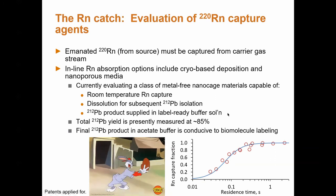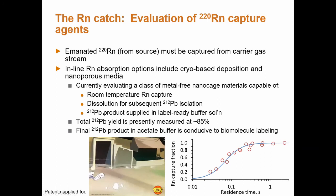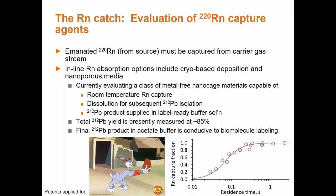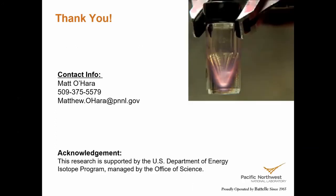The overall process between the pitch and catch processes achieves about 85% yield, and we don't think you can get beyond that yield with the wet column-based generator. That concludes my presentation, and I look forward to answering questions at the appropriate time.